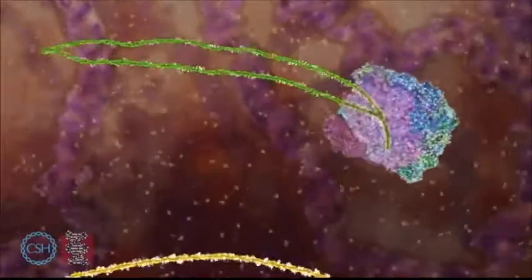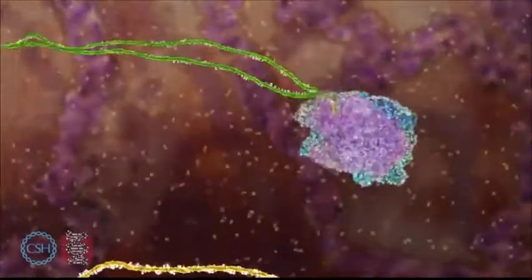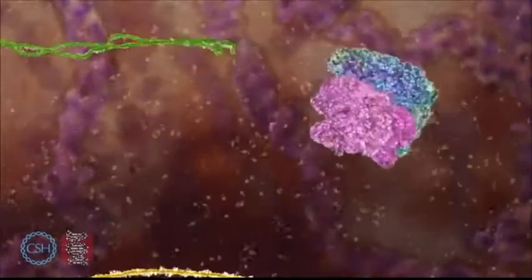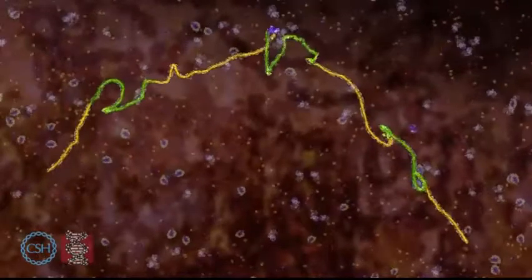The edited RNA and intron are released and the splicesome disassembles. This process is repeated for every intron in the RNA.